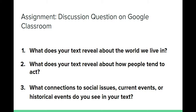So on Classroom, you're going to have some discussion questions. I want you to think about: what does your text reveal about the world we live in? What does your text reveal about how people tend to act? I feel like there's a lot of selfishness in dystopian novels. And then, what connections to social issues, current events, or historical events do you see in your text? If you're not sure how to answer this, just write some of the things you've noticed as we're wrapping this up.